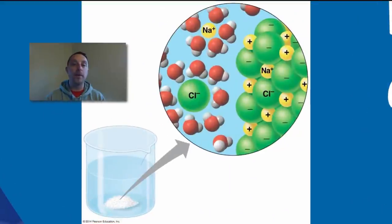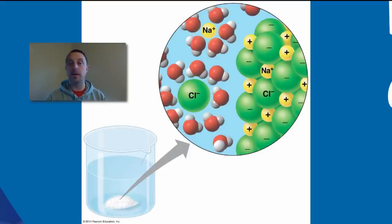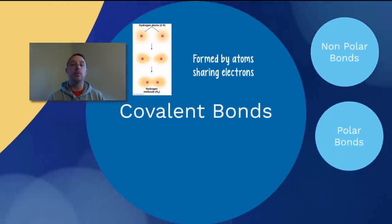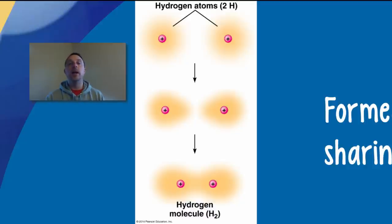In terms of properties, probably the most important property of ionic compounds is they are very, very soluble in water — and water is something we'll spend time on later in this video. If the electronegativities are a little bit closer together, then the atoms will form a covalent bond. In a covalent bond, instead of electrons being transferred from one atom to the other, the electrons are shared, and these shared electrons hold the two atoms together in a very strong bond.